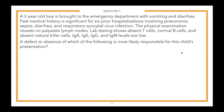A two-year-old boy is brought to the emergency department with vomiting and diarrhea. Past medical history is significant for six prior hospitalizations involving pneumonia, sepsis, diarrhea, and respiratory syncytial virus infection. Physical examination reveals no palpable lymph nodes. Lab testing shows absent T cells, normal B cells, and absent natural killer cells. IgA, IgE, IgG, and IgM levels are low. A defect or absence of which of the following is most likely responsible for this child's presentation?